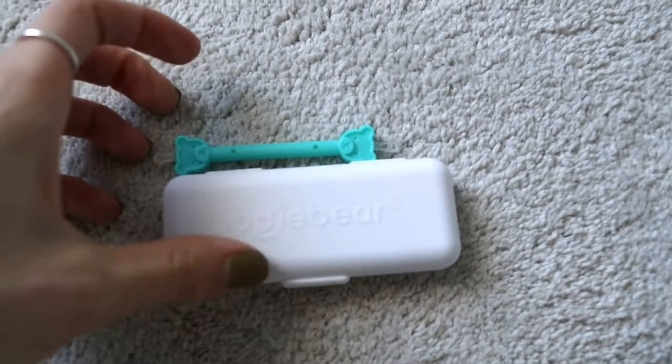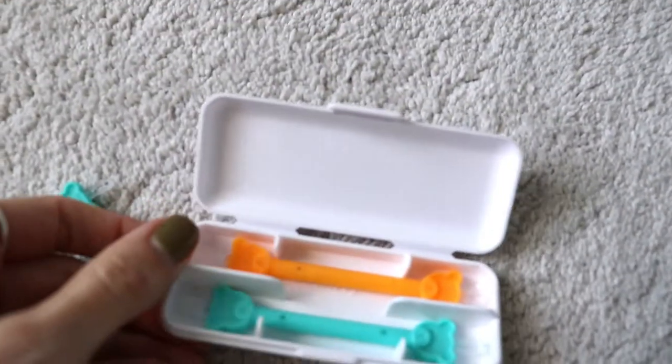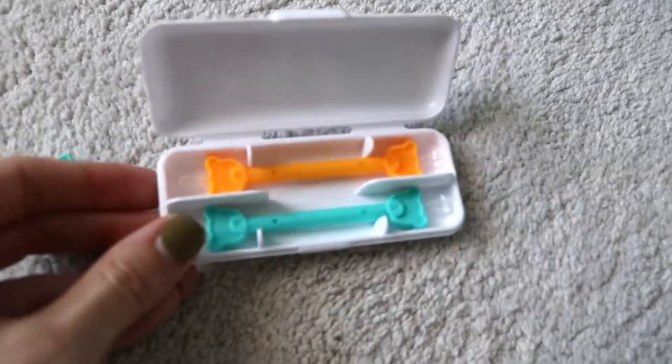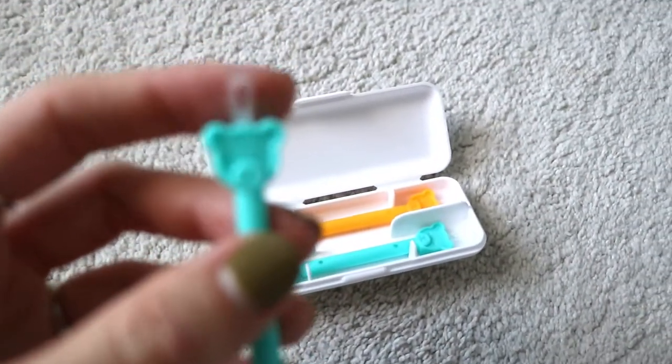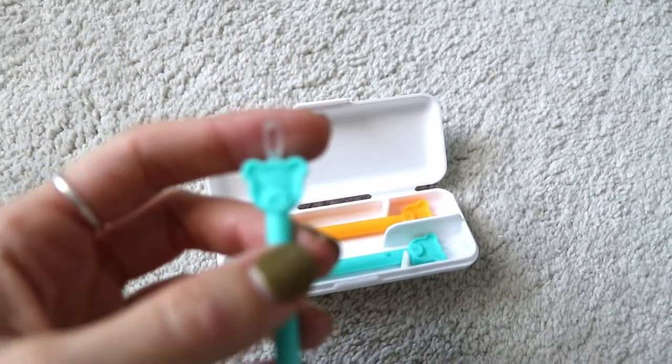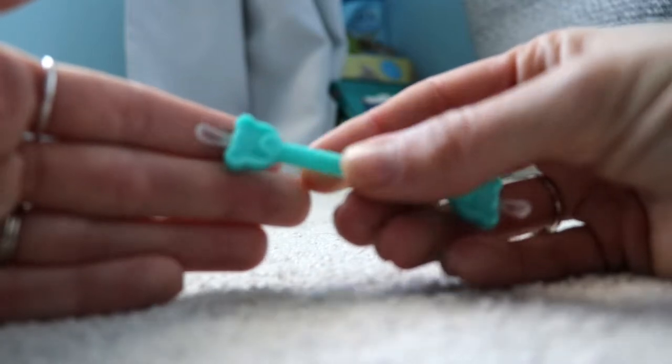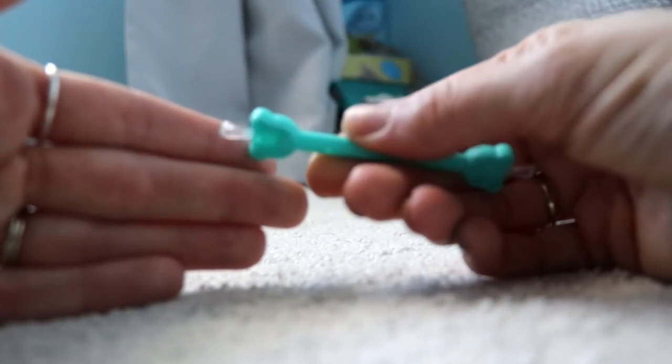Next up are these Oogie Bear nose and ear picks. So I thought these were great for, again, earwax and it has a little safety protector so it doesn't go too deep in their ear. I couldn't get my camera to focus, but it has a loop and a scoop just right for picking earwax and boogies.